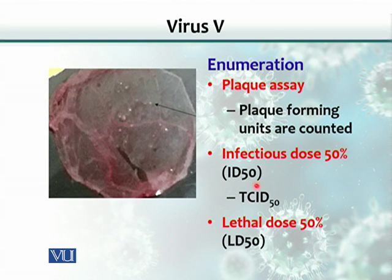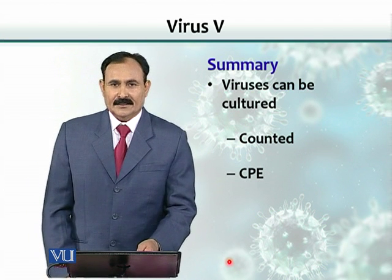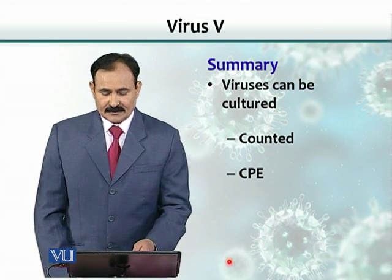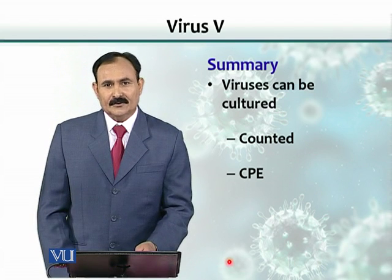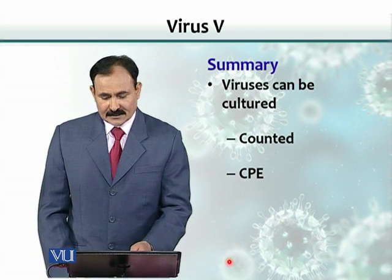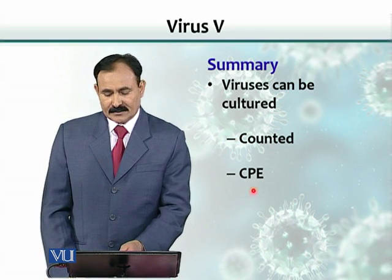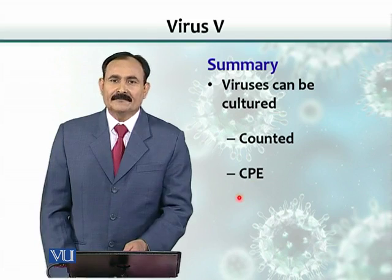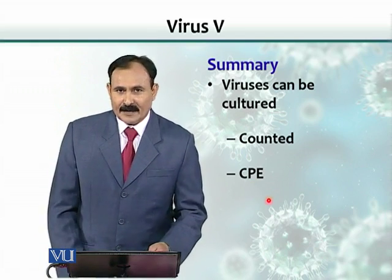LD50 and ID50 are very commonly used in animal virology. In summary, viruses can be grown on various cells — animals, embryonated hen eggs, or cell cultures from plants or animals. They can be counted using cytopathic effect (CPE) in cell culture, much like colonies or plaques on plates.